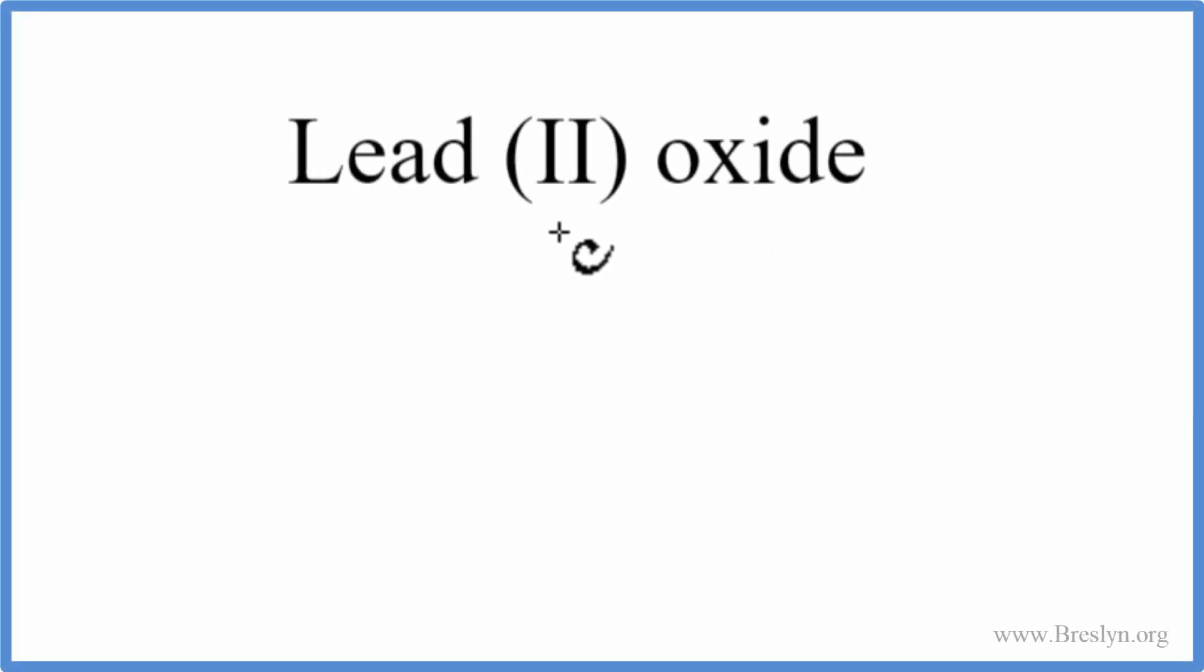To write the formula for lead(II) oxide, we go to the periodic table. Lead, the element symbol is Pb, and then oxide, we're looking for oxygen, that's O.